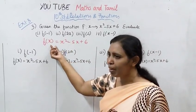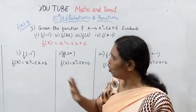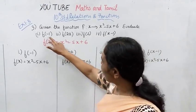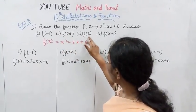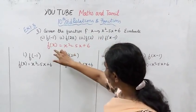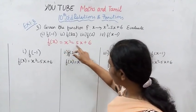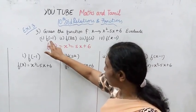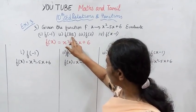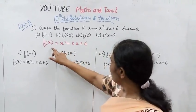Find: first subdivision f of minus 1, second subdivision f of 2a, third subdivision f of 2, and f of x minus 1. The function is f of x equals x square minus 5x plus 6.